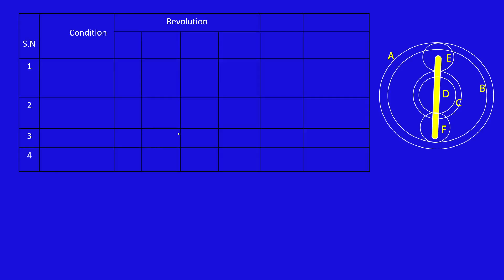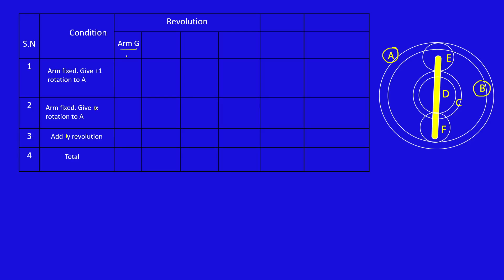Next, the tabular method. In the first row, arm is fixed and we give plus one rotation to gear A, because we need to find the speed of gear B and we start with gear A. The column order is: arm G comes first, then A, then gear E (since A touches E), then C and D (as they are a common gear), then F (since C and D touch F), and finally B.